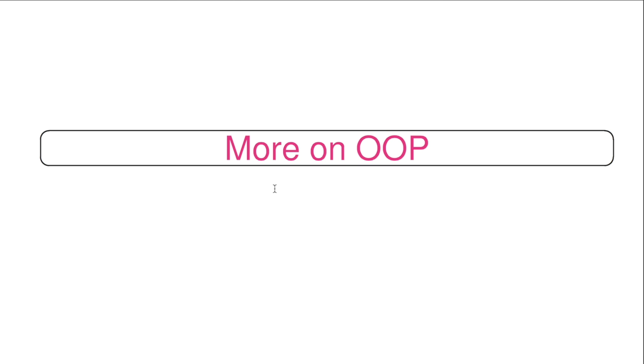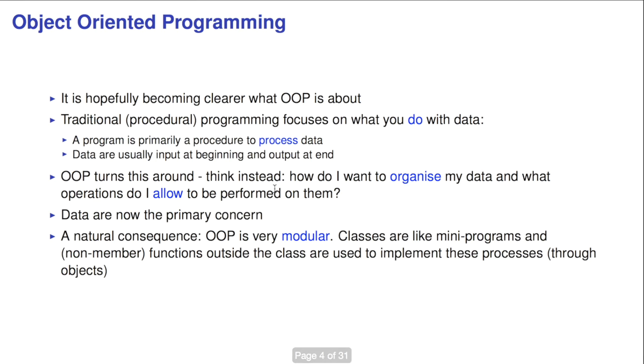Let's look a little bit about what object-oriented programming was really about. Hopefully, that's becoming a little bit clearer by all the examples we've been doing. But today we're going to really distinguish between the traditional procedural programming, which focuses on what you do with data. The idea is that the program is primarily a procedure to process data. Data are usually input at the beginning of a program and output at the end, and in between they get manipulated by the code, the procedures we've written.